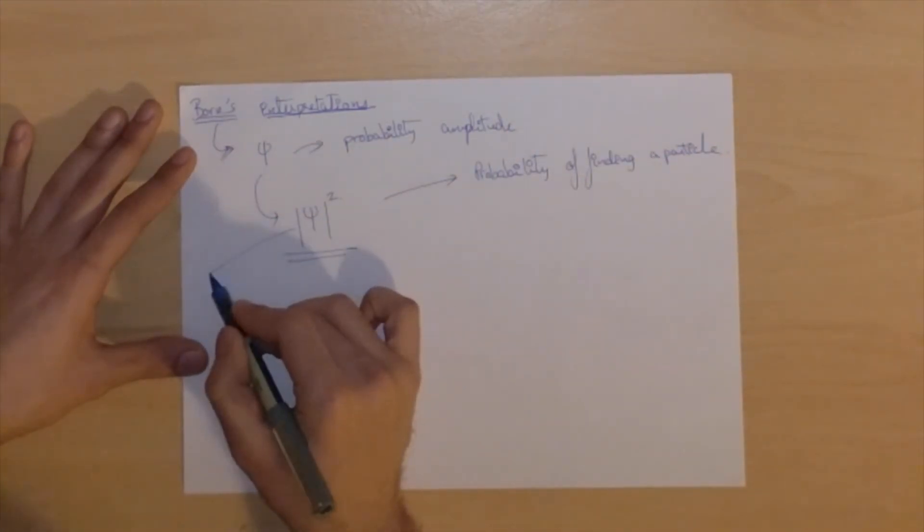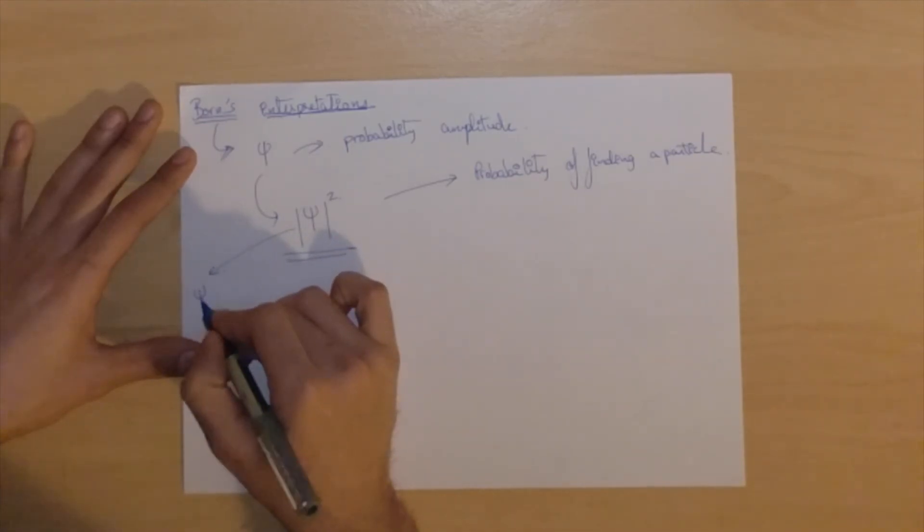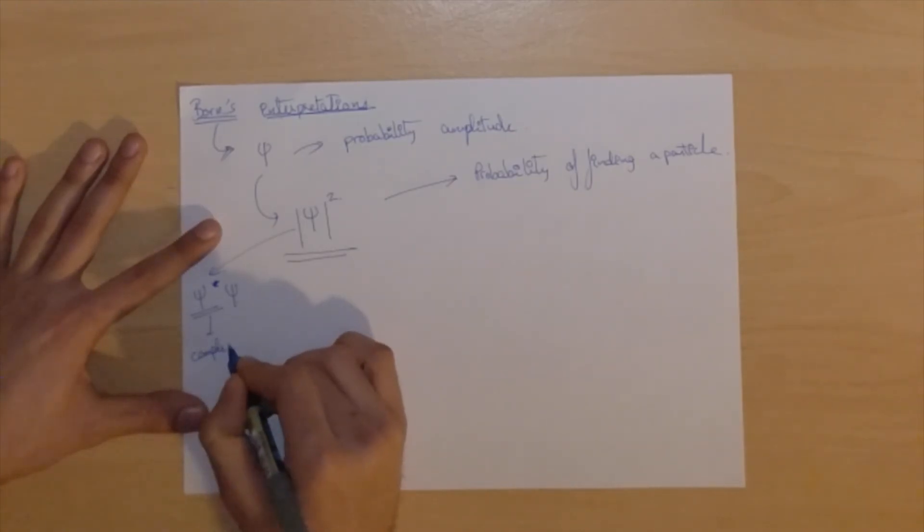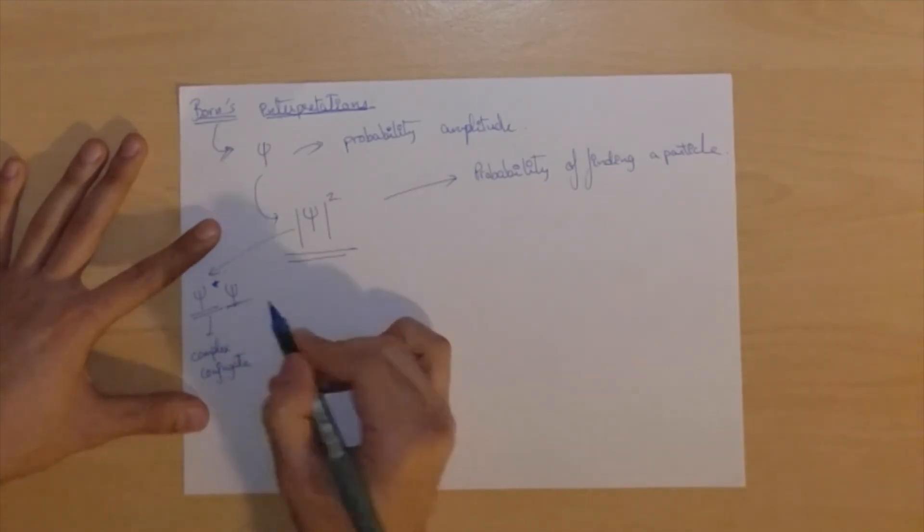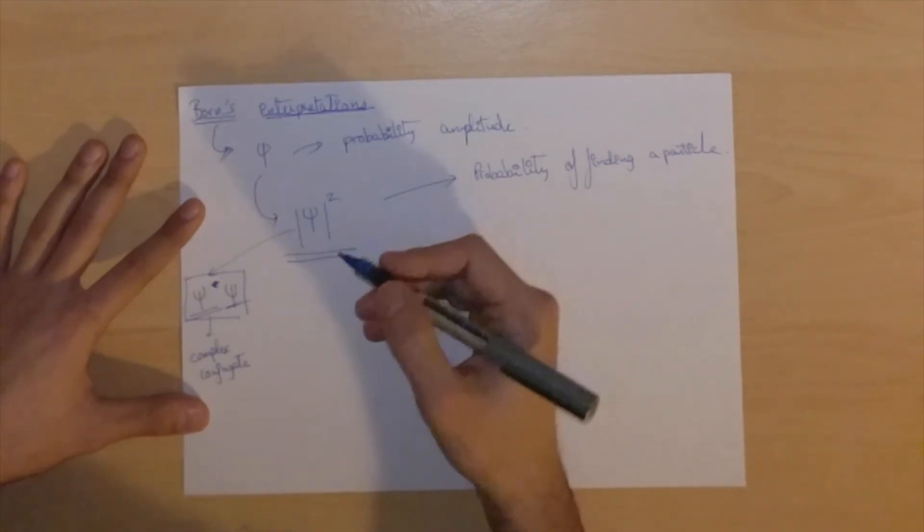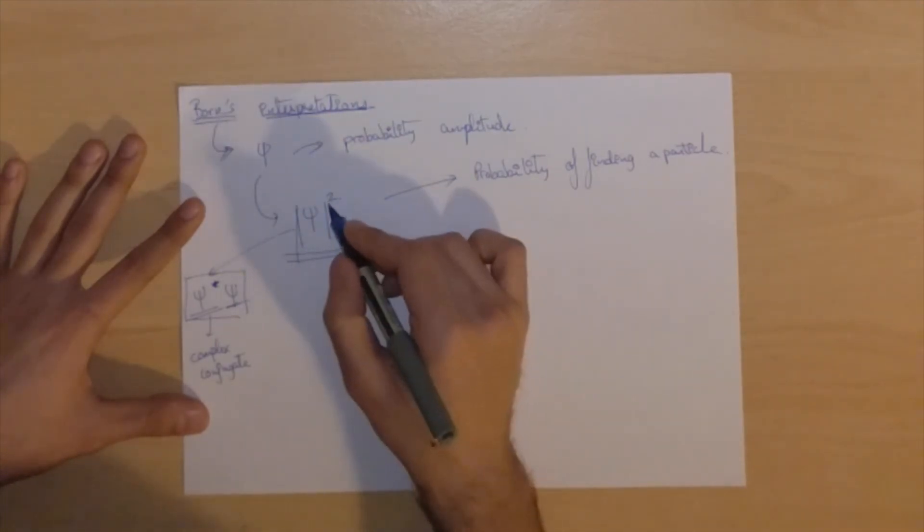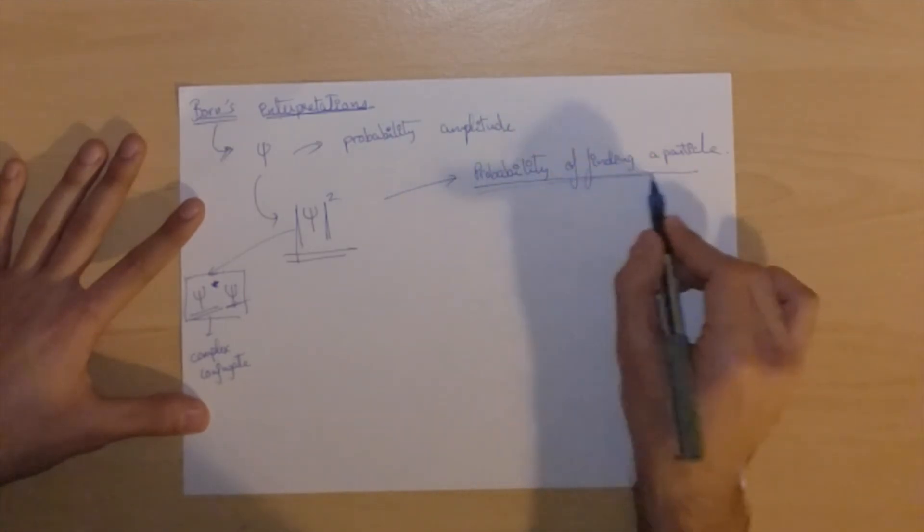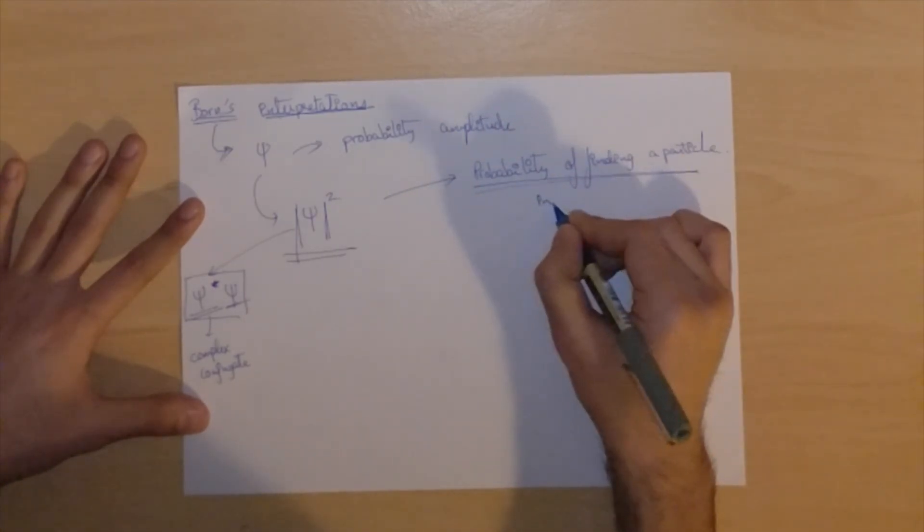So this square that we used over here is equivalent to psi star times psi. Now this star is the complex conjugate times psi itself. This is a way of squaring complex numbers in case psi is a complex number or complex values. But if it's not, you can just write psi squared as you normally would.